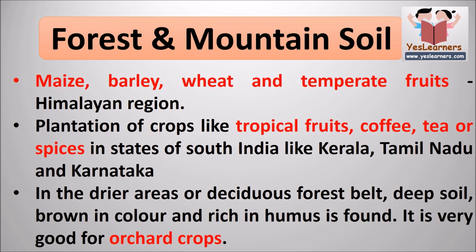Crops like maize, barley, wheat and temperate fruits are grown in mountain soil in the Himalayan region. Plantation crops like tropical fruits, coffee, tea and spices are grown in states of South India like Kerala, Tamil Nadu and Karnataka. In the drier areas or deciduous forest belt, deep brown soil rich in humus is found, which is very good for orchard crops.